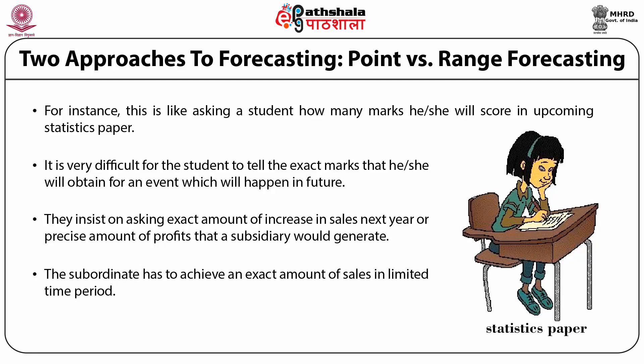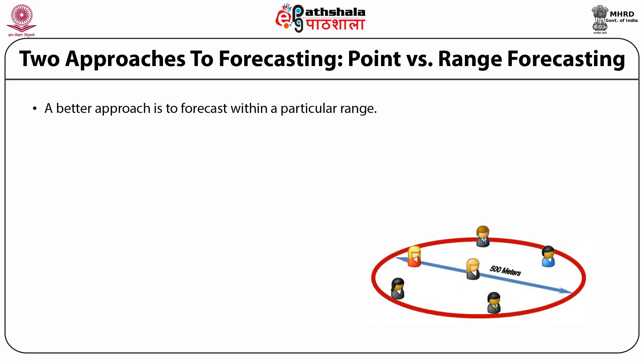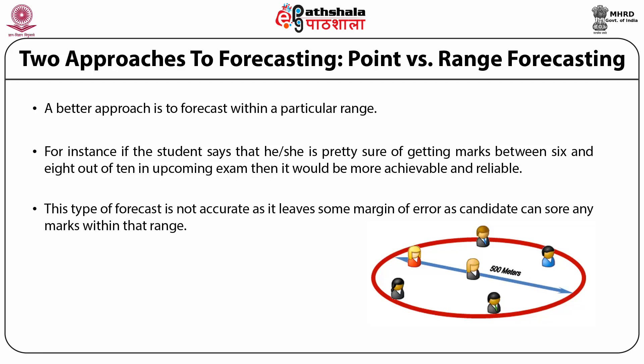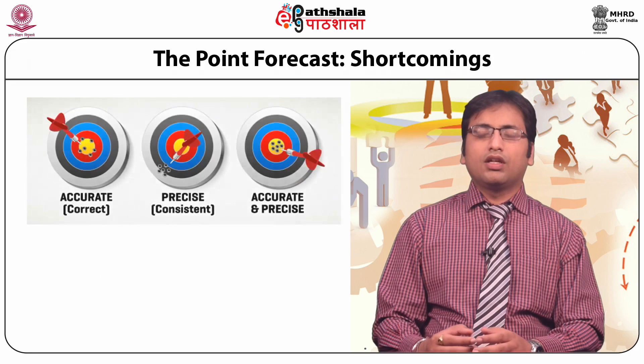It becomes quite difficult for a subordinate to achieve the same precise amount. A better approach is to forecast within a particular range. For instance, if the student says that he or she is pretty sure of getting marks between 6 and 8 out of 10 in the upcoming exam, then it would be more achievable and reliable. This type of forecast leaves some margin of error, as candidates can score any marks within that range, but it tends to provide more probable outcomes.